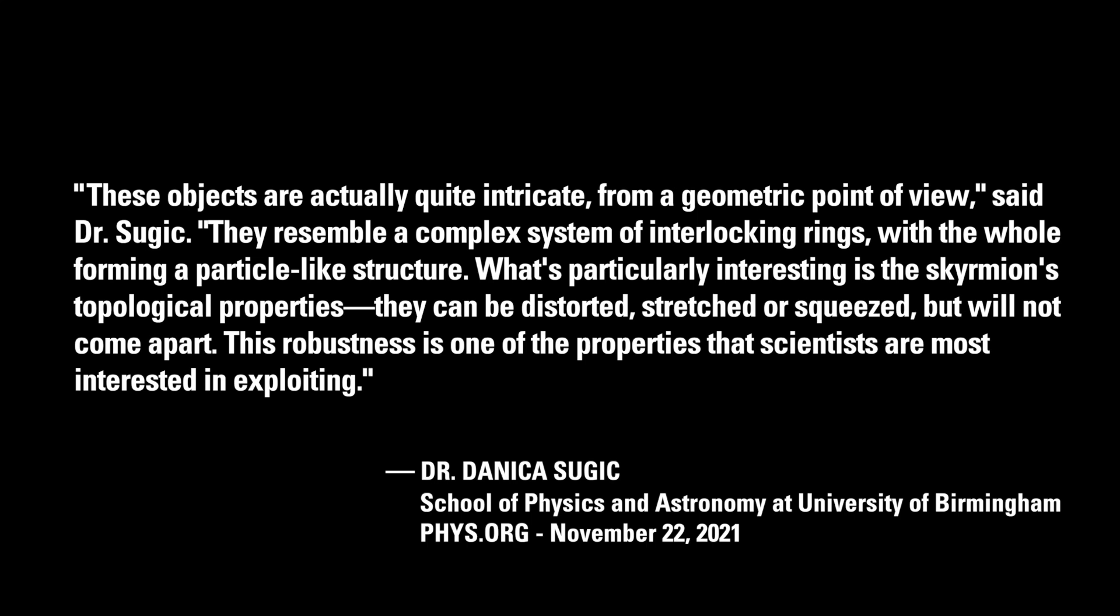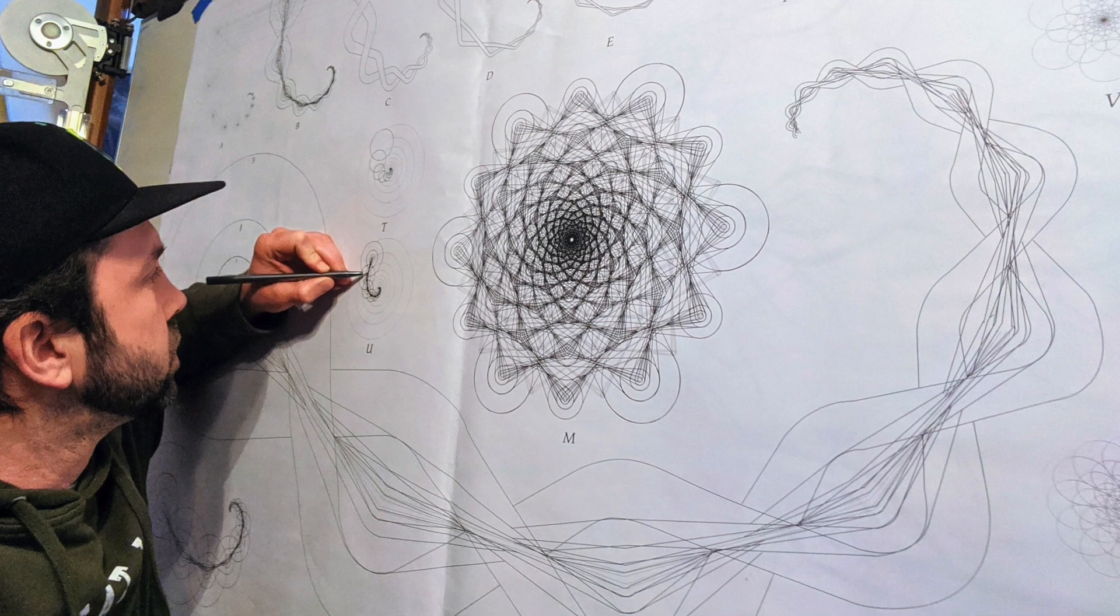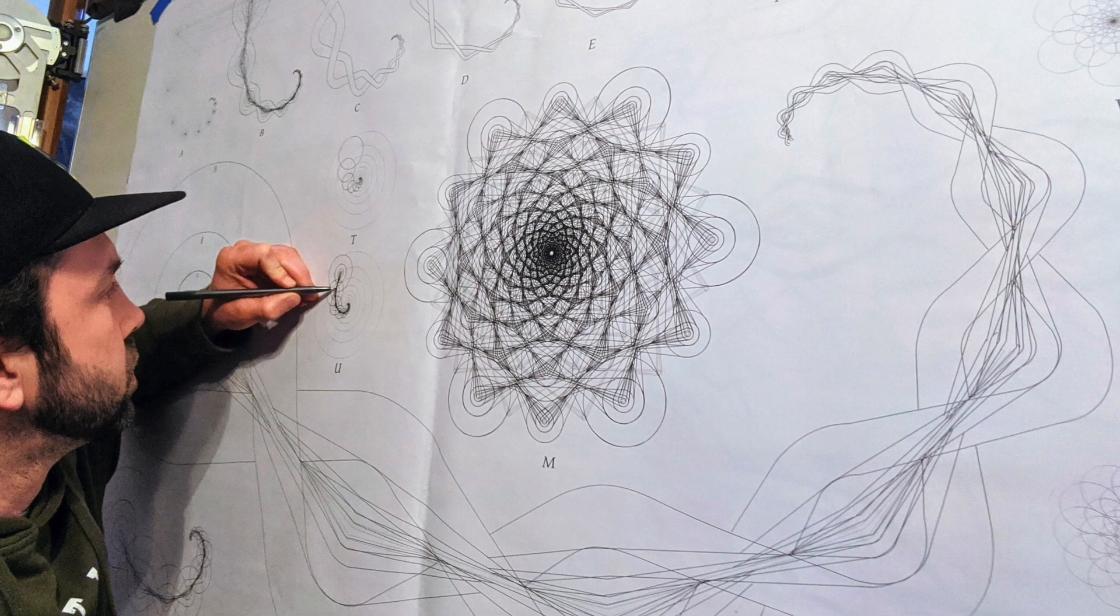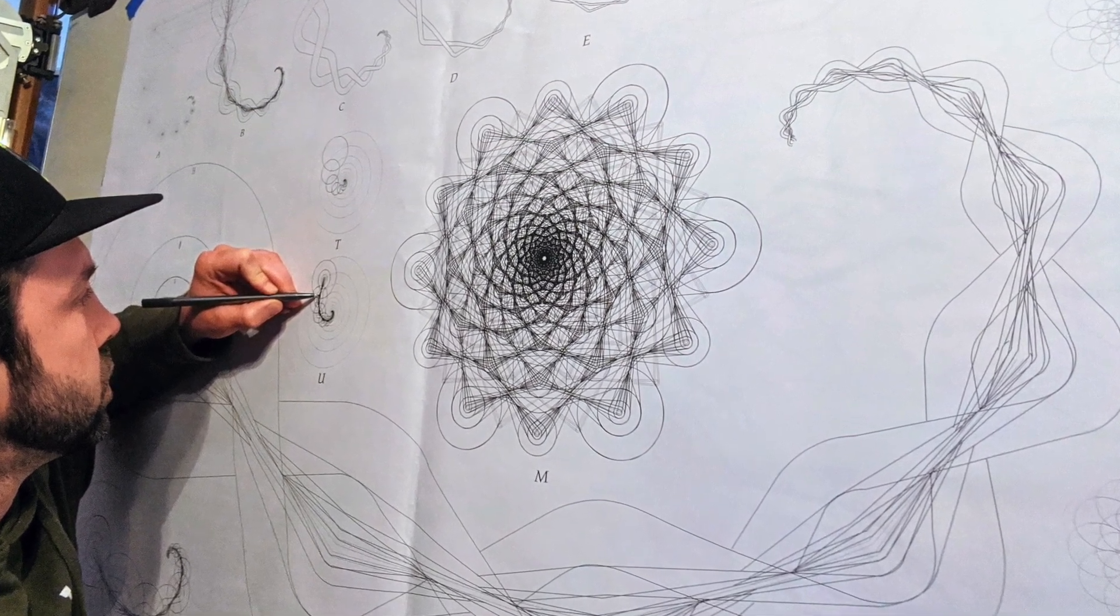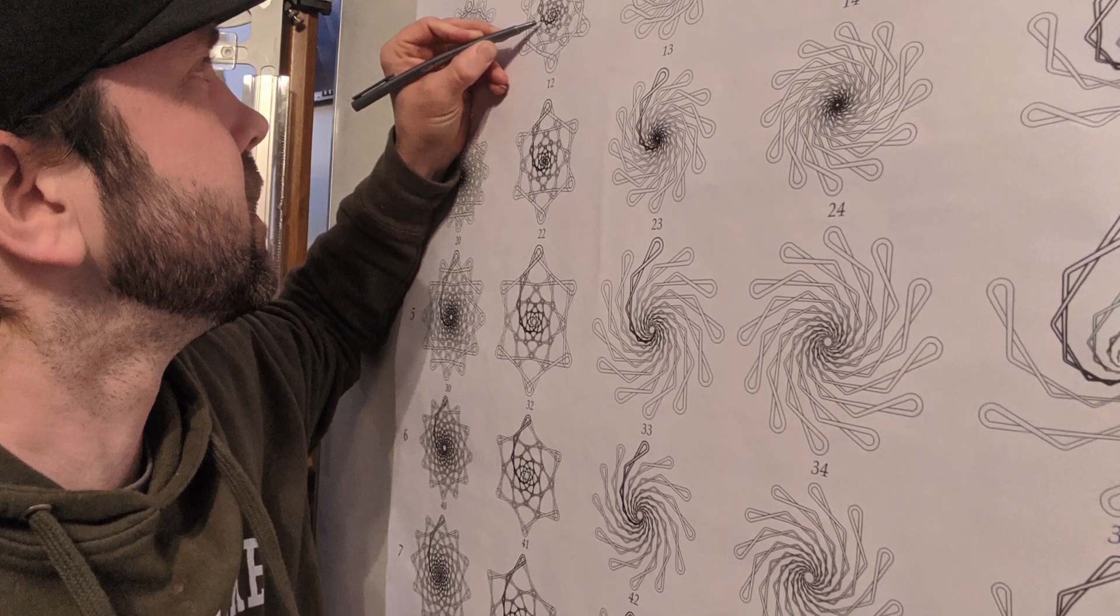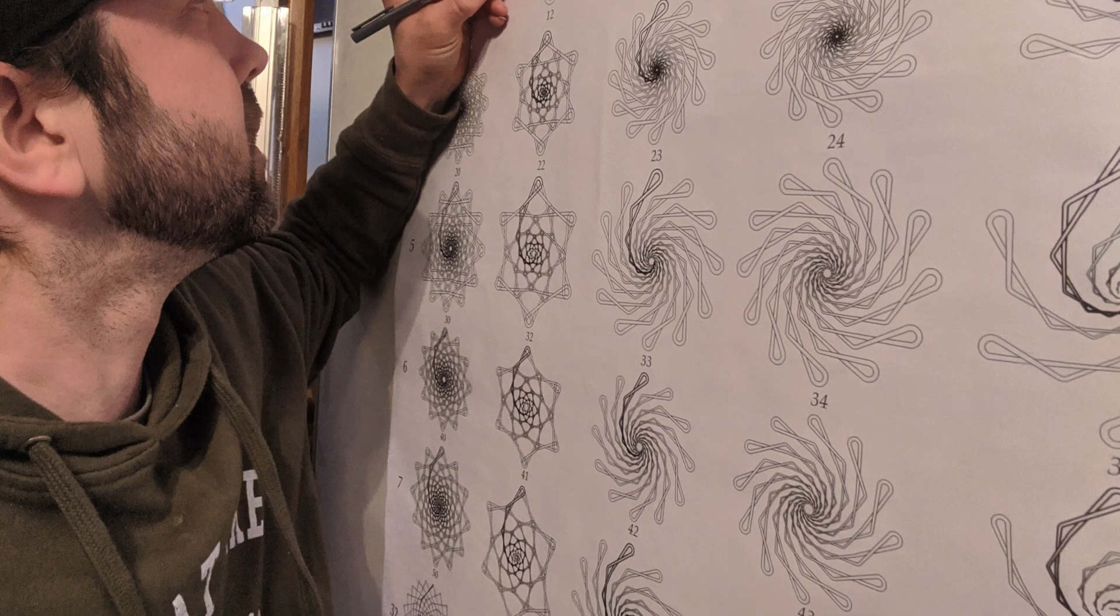They resemble a complex system of interlocking rings with the whole forming a particle-like structure. What is particularly interesting is the skyrmions' topological properties. They can be distorted, stretched, or squeezed but will not come apart. This robustness is one of the properties that scientists are most interested in exploiting. If this is true and these structures are inherent in the Doherty set, this gives more credence to the predictive power of the set.